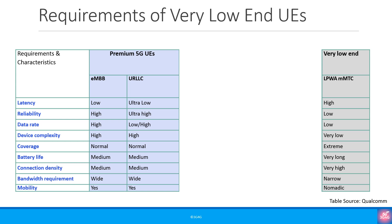It is important to note that while the coverage requirement for eMBB and URLLC is shown as normal, the coverage requirement for IoT devices is shown as extreme. This is mainly because in many cases the IoT devices will only transmit once — if there is no reception, the message will get lost. For reliable reception, IoT devices transmit with much higher power compared to normal cellular transmissions.